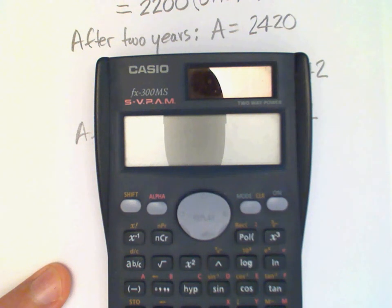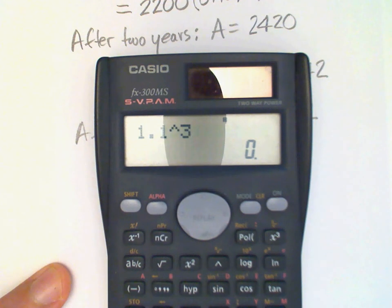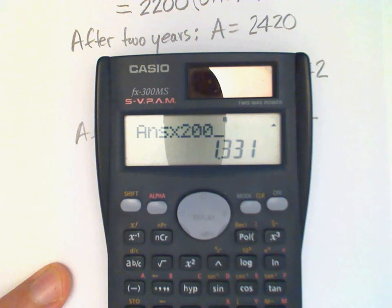1.1 raised to the third power equals 1.331. Now we multiply that by our principal times 2,000, and the answer is 2,662.